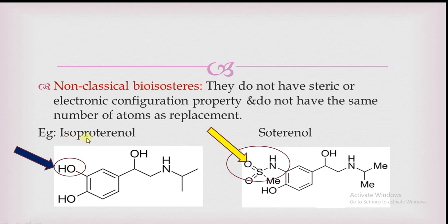An example is isoproterenol, which contains an OH group — that is, one oxygen and one hydrogen atom. The non-classical bioisostere soterenol contains an SO₂CH₃NH group, which is a sulfamoyl methyl group. This group has a completely different configuration and a different number of atoms compared to isoproterenol. Soterenol shows better biological activity. This is an example of non-classical bioisosteres.